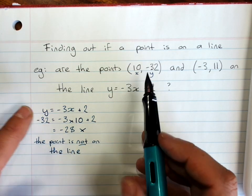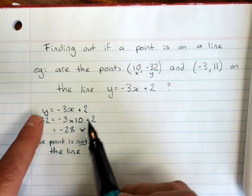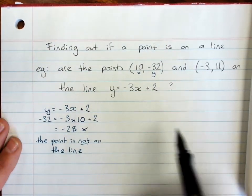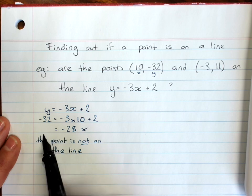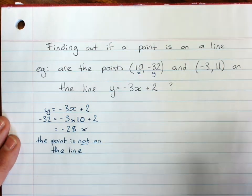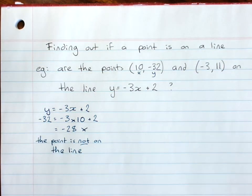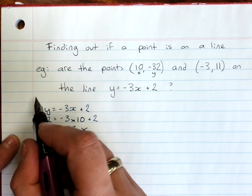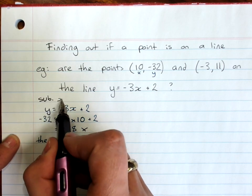So that's one way of doing it: just substituting in the x and y values into the rule and checking if you get the same number on both sides. We'll call this one substitute x and y.